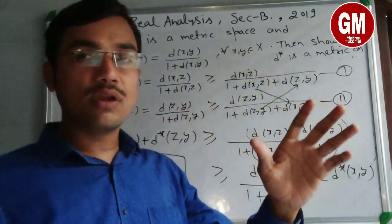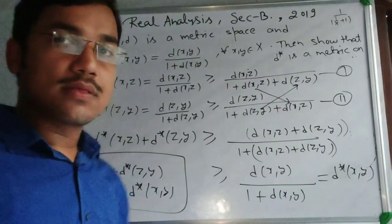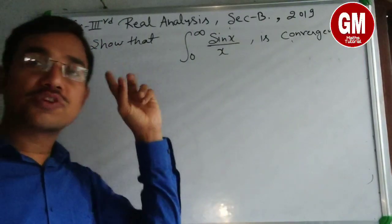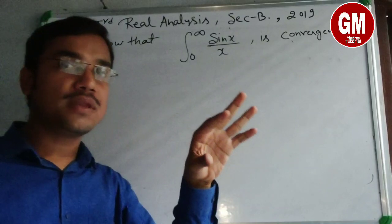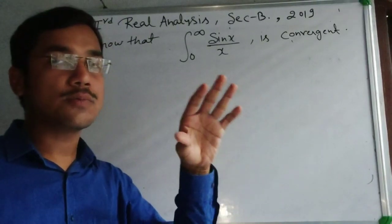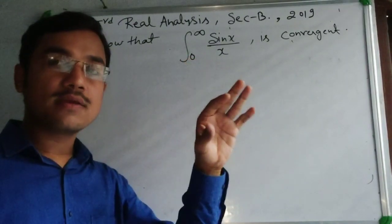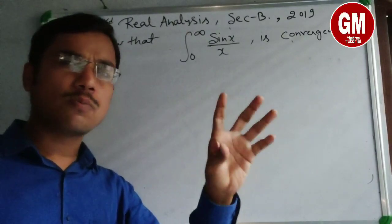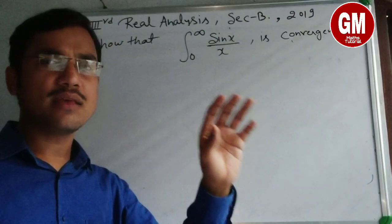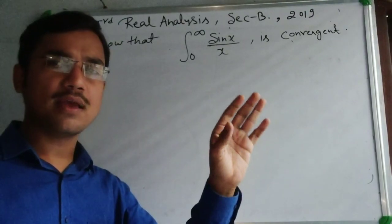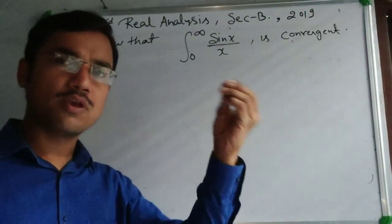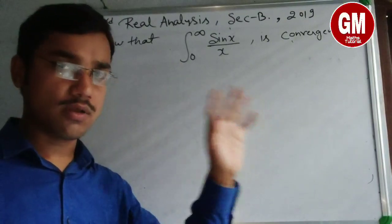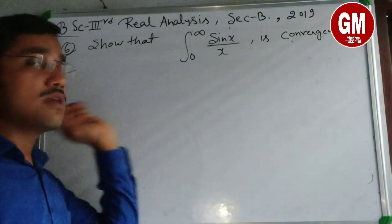Question 5 का second portion — every convergent sequence in a metric space is a Cauchy sequence — यह statement book में easily मिल जाएगी। इसलिए मैं इसको skip कर रहा हूं। अब Question 6 पर आते हैं।